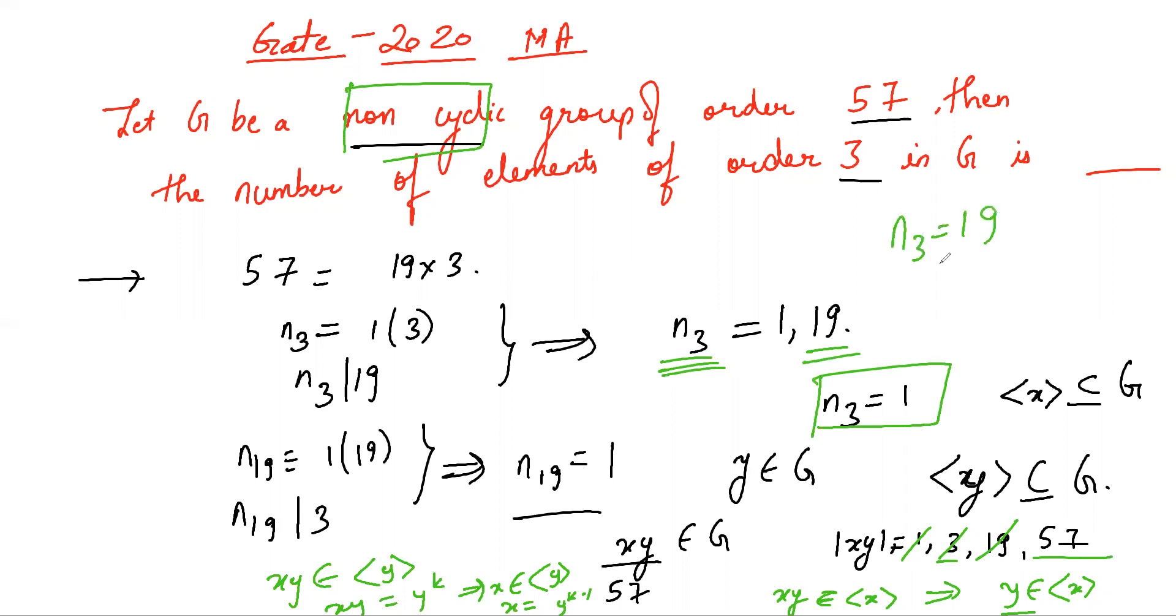So there are 19 distinct Sylow 3 subgroups, and any two distinct Sylow 3 subgroups intersect in the identity element, and each group of order 3 has two elements of order 3.